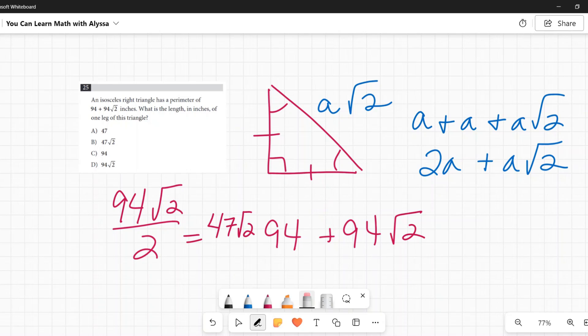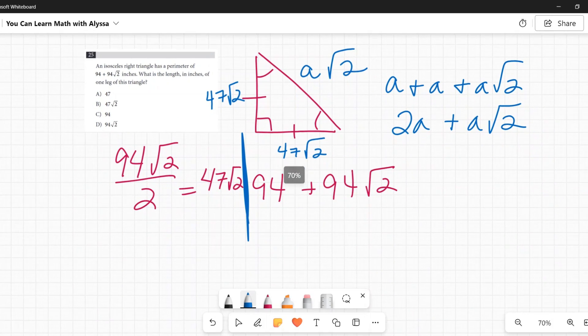Well, let's see if this works. If I say that a is 47 times the square root of two, then to get to the hypotenuse I would need to multiply my a, 47 square root of two, times another square root of two. Let's try that, let's see if it works.